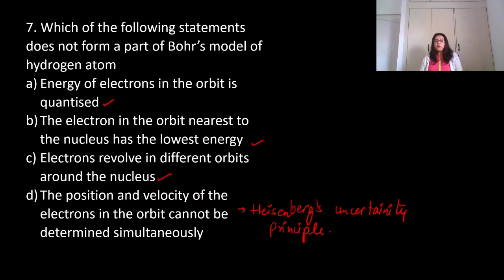Which of the following statements does not form a part of Bohr's model of hydrogen atom? Let's see what Bohr's model says: Energy of electrons in the orbit is quantized - yes. The electron in the orbit nearest to the nucleus has the lowest energy - yes, because energy increases as we move away from the nucleus. At infinity, energy equals zero; otherwise energies are negative. Electrons revolve in different orbits around the nucleus - this is also correct. The position and velocity of the electrons in the orbit cannot be determined simultaneously - this is Heisenberg's uncertainty principle, not Bohr's. So the correct option is D.